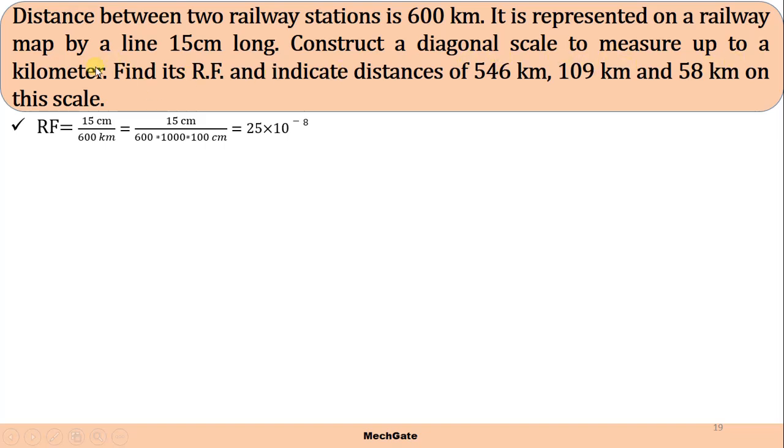Construct a diagonal scale to measure up to a kilometer. So minimum distance that could be measured using our scale is a single kilometer. Maximum distance to be measured using the scale is 600 kilometers. Find RF and indicate distances of 546 kilometers, 109 kilometers, and 58 kilometers on this scale.